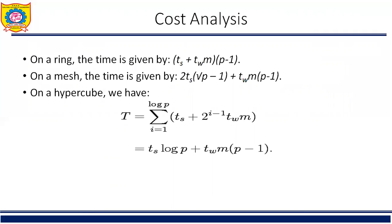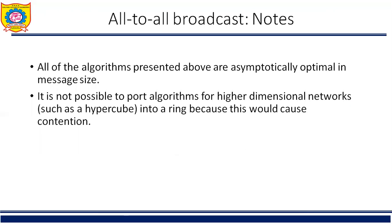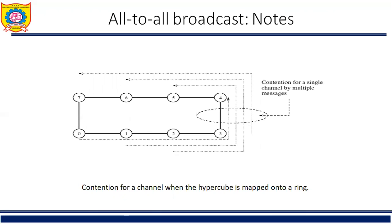The cost analysis is as follows. On the ring, the time is given by Ts + Tw*m*(P-1). On the mesh, the time is given by 2*Ts*(sqrt(P)-1) + Tw*m*(P-1). On the hypercube, T equals the summation for i from 1 to log P of (Ts + 2^(i-1)*Tw*m), which simplifies to T = Ts*log P + Tw*m*(P-1). All the algorithms presented are asymptotically optimal in message size. It is not possible to port the algorithm for higher-dimensional networks such as the hypercube onto the ring, as this would cause contention for channels.